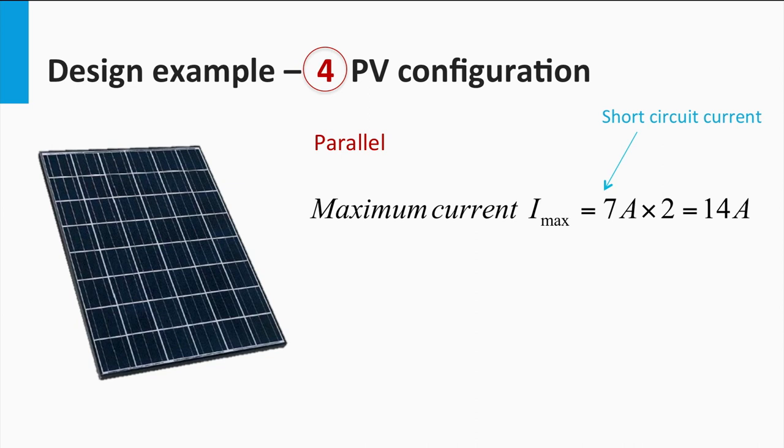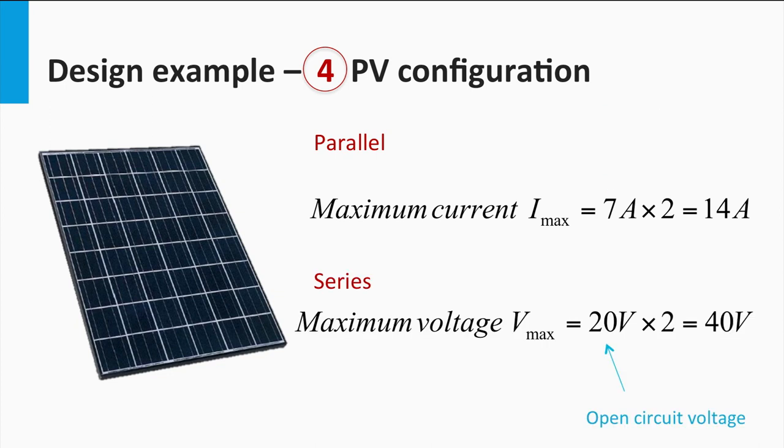Now, let us look at the possible PV configurations. The maximum allowable current and voltage rating can be found by assuming these scenarios. If the two panels are connected in parallel, then a maximum current of 2 times the short-circuit current is possible, which in this case is 40 A. On the other hand, if the two panels are connected in series, then a maximum voltage of 2 times the open-circuit voltage is possible, which will equal 40 volts.